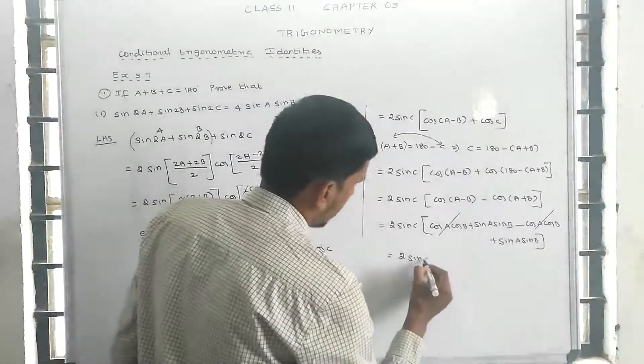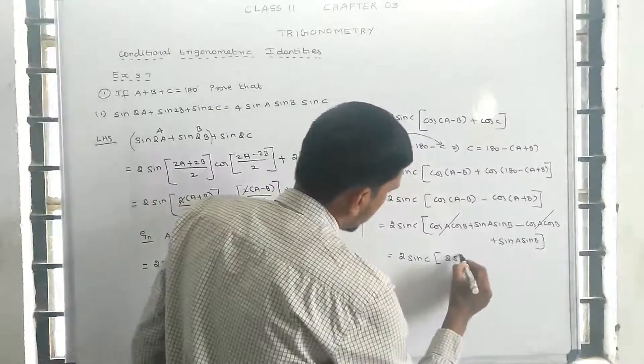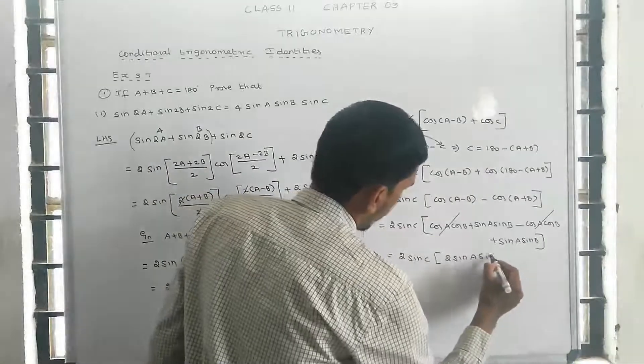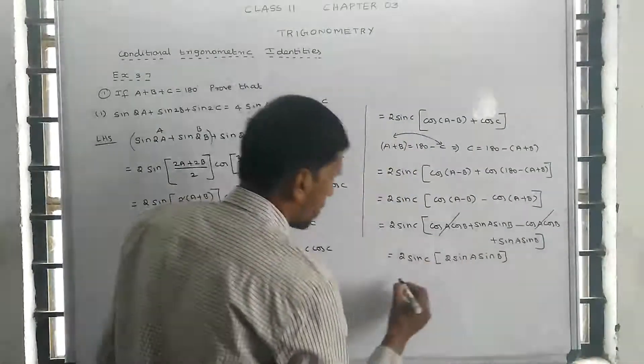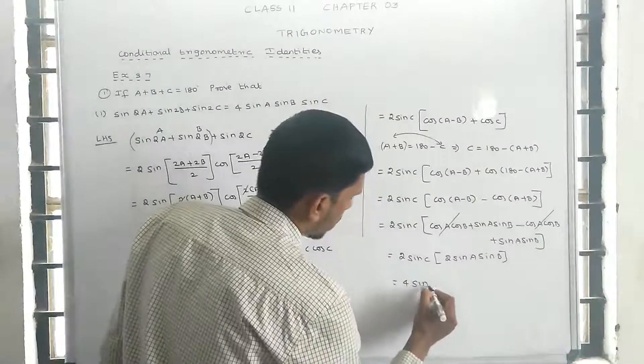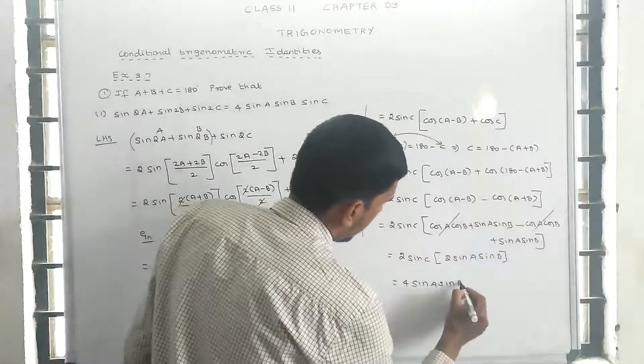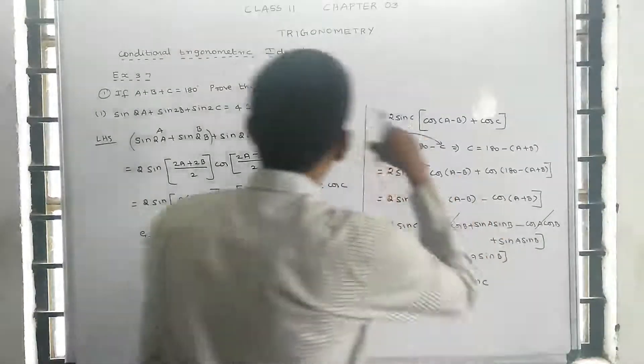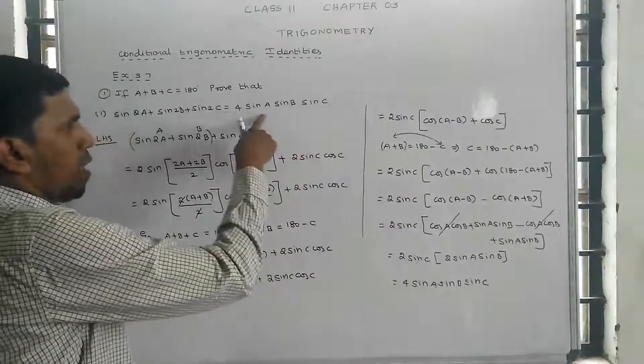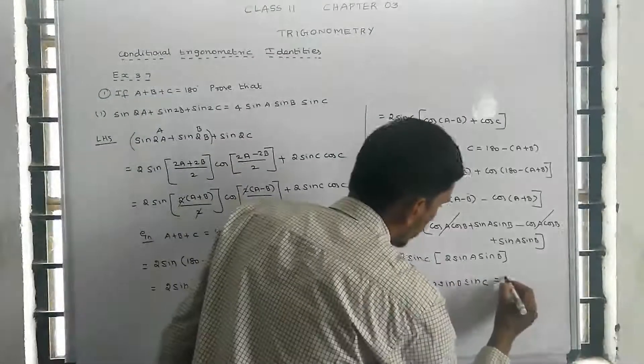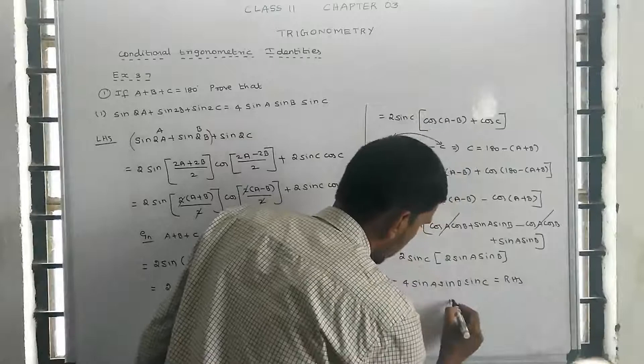This equals 2 sin c times 2 sin a sin b = 4 sin a sin b sin c, which equals the right-hand side. Hence proved.